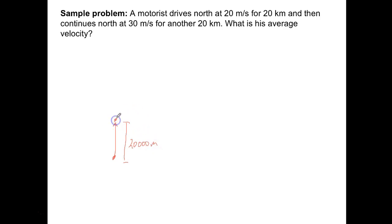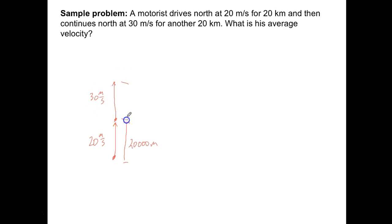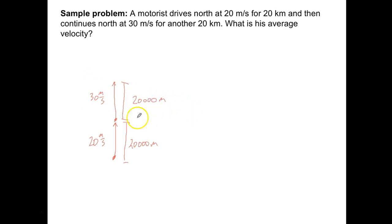Then we're going to do the same thing for the next segment. The first time we go 20 meters per second, and the second time we go 30 meters per second. It should take less time to cover that same distance because you're going faster. This segment is also 20,000 meters. They want to know what the average velocity is.